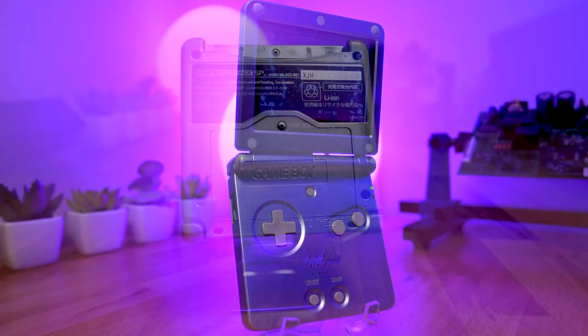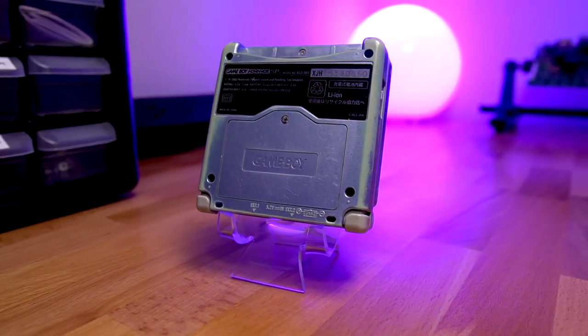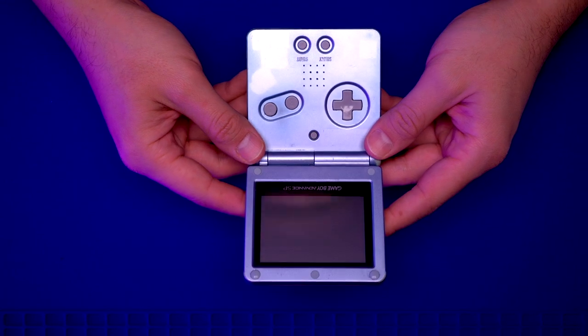The Game Boy Advance SP is the second iteration of the Advance line of Game Boy consoles. This version introduced a new clamshell form factor which gave it a smaller overall footprint.